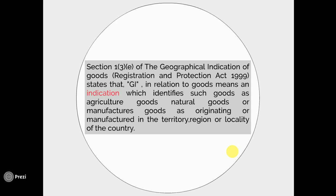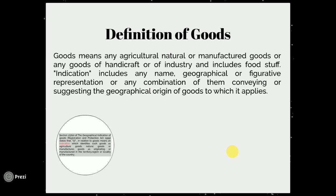Section 1, Subsection 3(e) of the Geographical Indication of Goods Registration and Protection Act, 1999 states that GI in relation to goods means an indication which identifies such goods as agricultural goods, natural goods, or manufactured goods of a country. The definition of goods means any agricultural, natural, or manufactured goods, or any goods of handicraft or of industry, and includes foodstuff. Indication means it includes any name, geographical or figurative representation, or any combination of them conveying or suggesting the geographical origin of goods to which it applies.